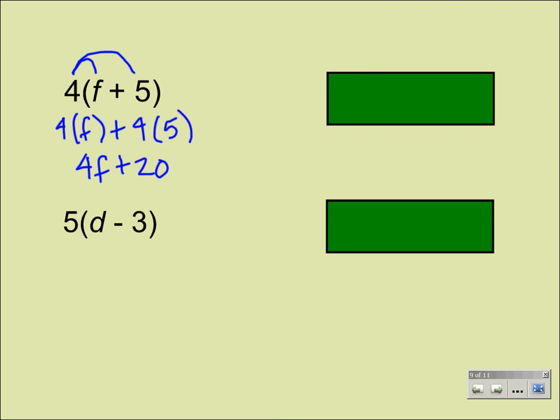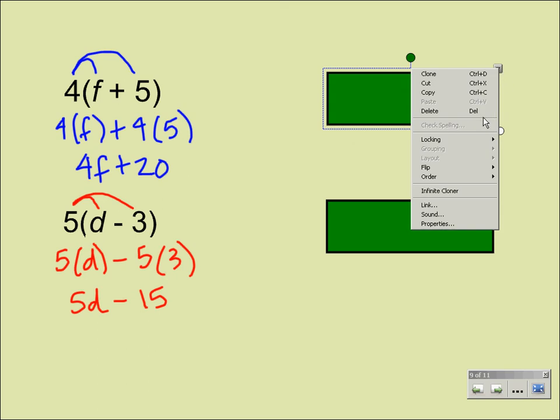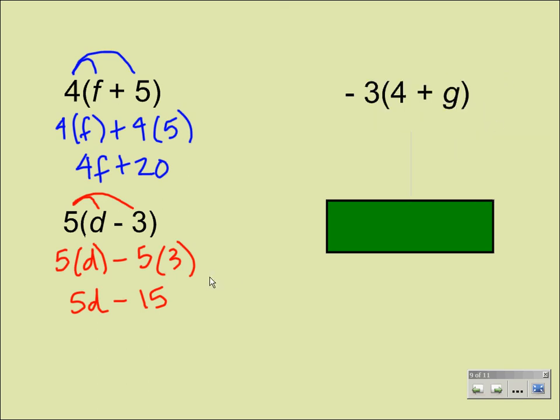Let's take a look at another problem here. 5 times the quantity of D minus 3. If I distribute the 5 to the D and the 5 to the 3, we can bring this down and show our multiplication again. 5 times the quantity of D minus 5 times the quantity of 3. We go ahead and simplify by order of operations. 5 times D is 5D, and 5 times 3 is 15. We can't bring it down any further or combine it any further because there are no more like terms.